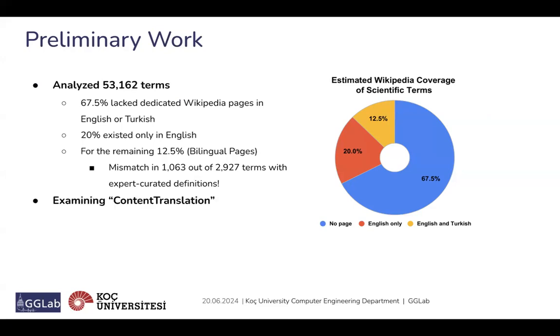Next, we examined the content translation terms shared by Wikipedia, which revealed numerous inaccuracies in both machine-generated and human-edited translations. These inaccuracies were particularly prevalent in the translation of scientific content. This finding highlights the need for improved translation practices, especially for scientific and technical terms.